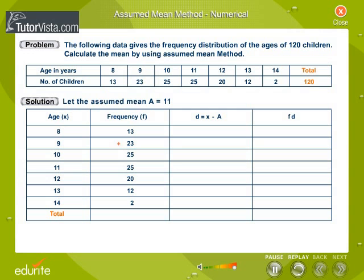The sum of all the frequencies is calculated by adding all the frequencies. Therefore, sigma F is equal to 120.